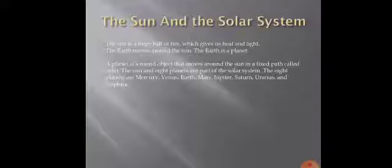A planet is a round object that moves around the sun in a fixed path called an orbit. The sun and eight planets are part of the solar system.